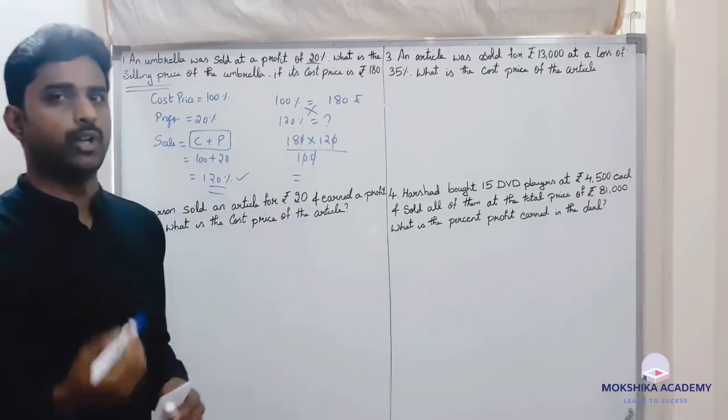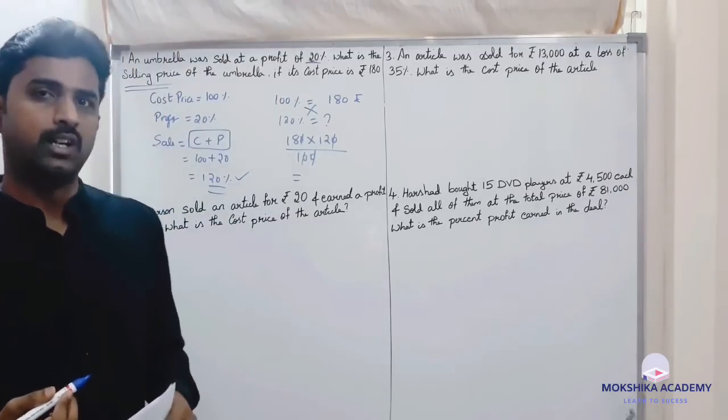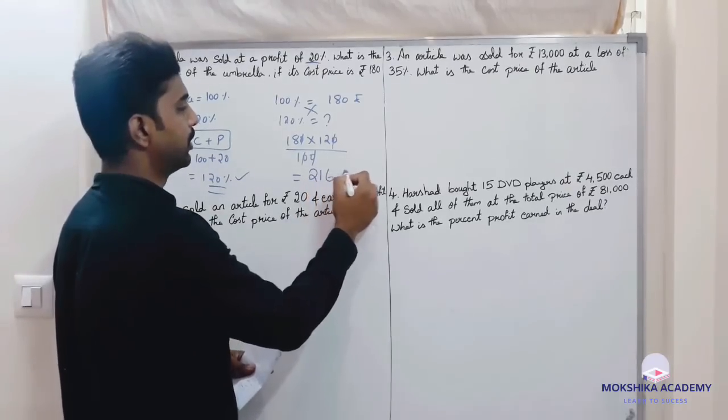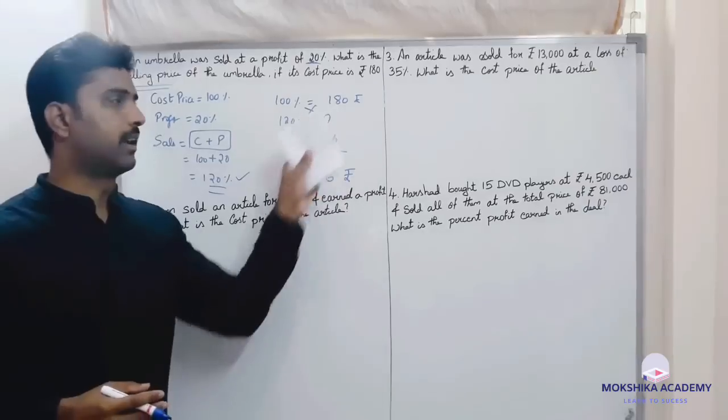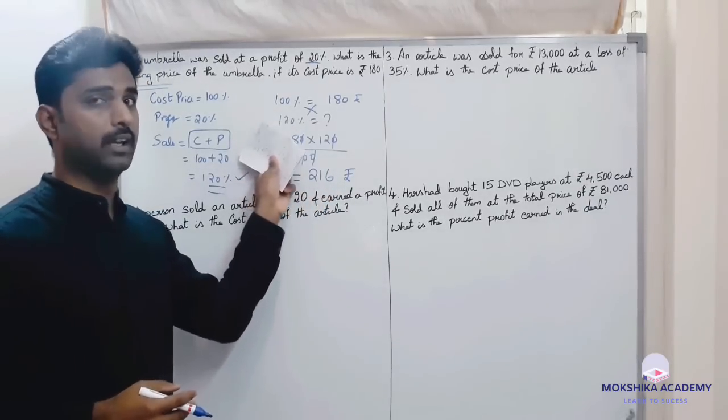Zero zeros will cancel. 18 into 12: 18 into 10 is 180, 18 into 2 is 36. 180 plus 36 is 216.